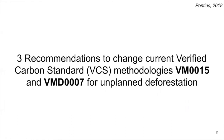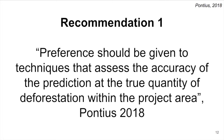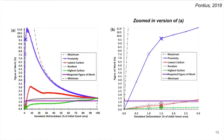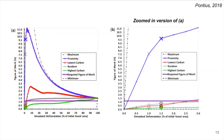This presentation has three recommendations to change current VCS methodologies VM0015 and VMD0007 for unplanned deforestation. The first recommendation is that preference should be given to techniques that assess the accuracy of the prediction of the true quantity of deforestation within the project area. Graph A shows FOM versus the quantity of simulated deforestation for four different allocation methods: proximity, lowest carbon, highest carbon, and random allocation. The required FOM for a model to qualify is the purple horizontal line. Bold markers indicate the true deforestation quantity during the confirmation period, and large markers indicate the extrapolated quantity. Figure B is a zoomed-in version of that graph.